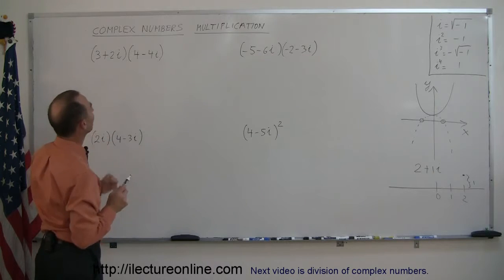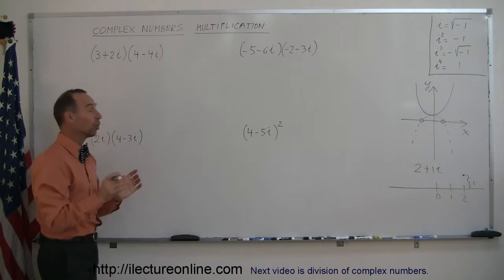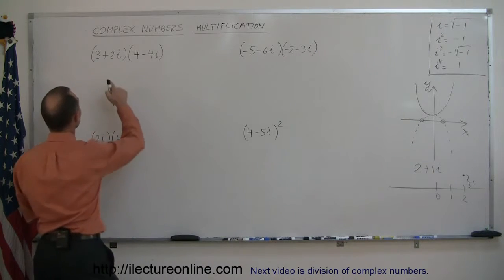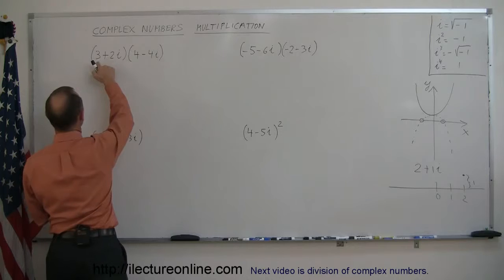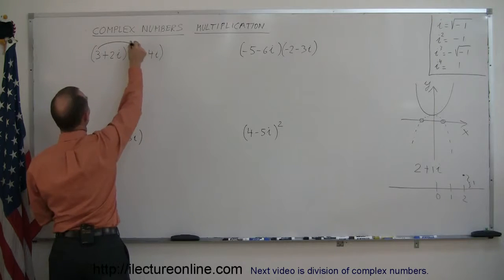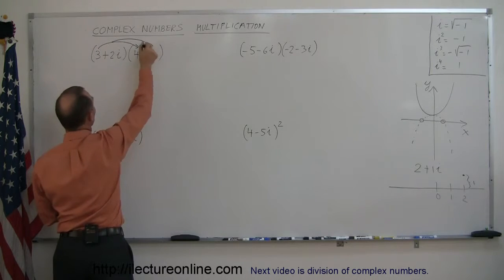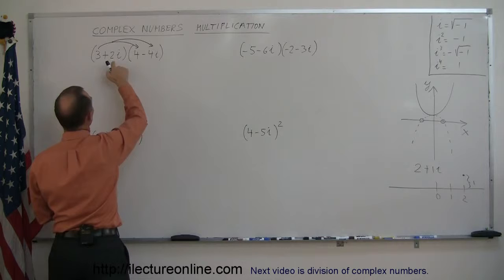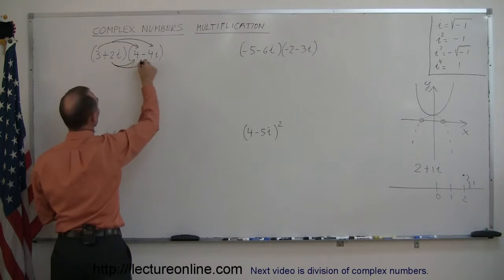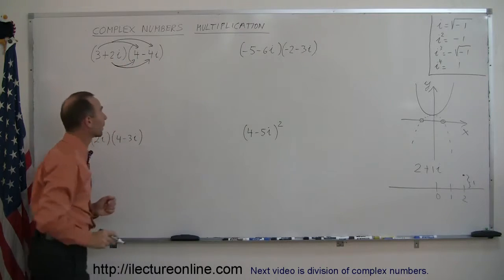So let's take a look at this. Just like multiplying binomials, you're going to take the first term of the first binomial and multiply it times the two terms in the second, and then take the second term and multiply it again times the two terms in the second binomial.